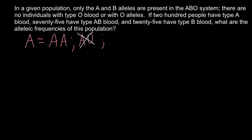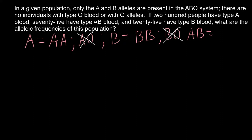Blood group B can also be made by two genotypes: BB and BO. Because in our example this gene pool doesn't have O alleles, we can cross out BO. Blood group AB can be made by only one genotype: AB. And blood group O can be made by only one genotype: OO. We completely don't have this blood group here because we don't have allele O.